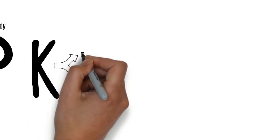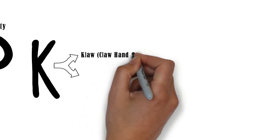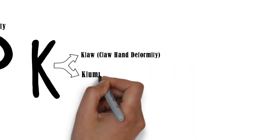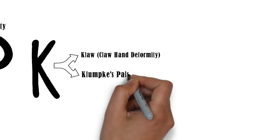For the deformity as seen in Klumpke's palsy, you can use K as a mnemonic where K stands for claw hand deformity and also for Klumpke's palsy.